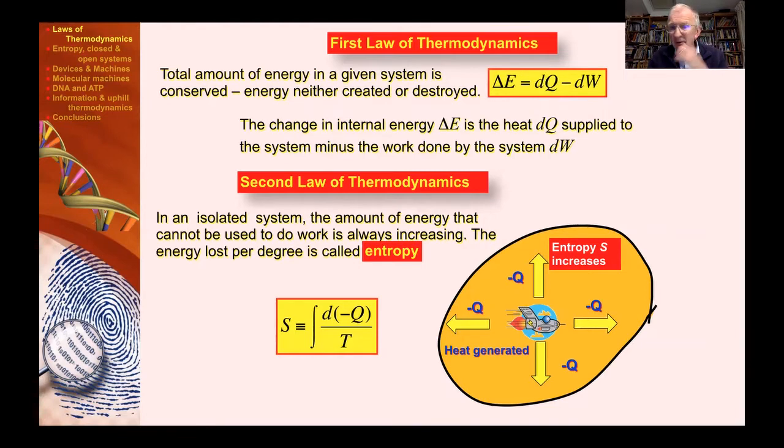The point about entropy, which leads us to the second law, is that if heat is being given out, it will always be such that you could never retrieve it. You'll never be able to get that energy back. We call this essentially the entropy—it's energy divided by temperature, wasted energy, heat which no longer can be used.